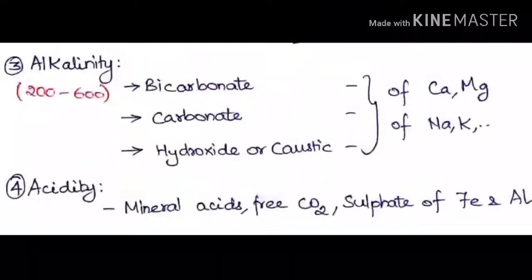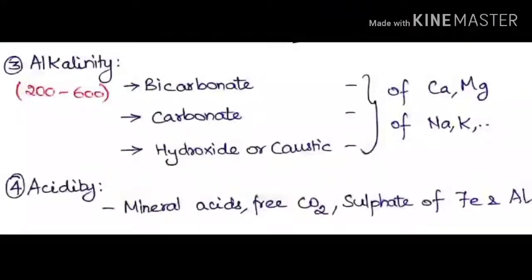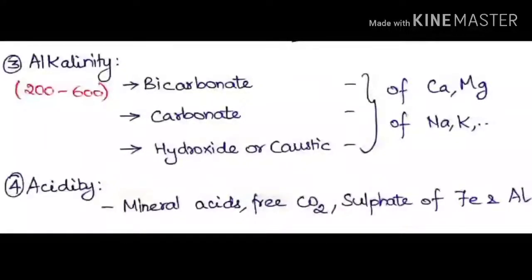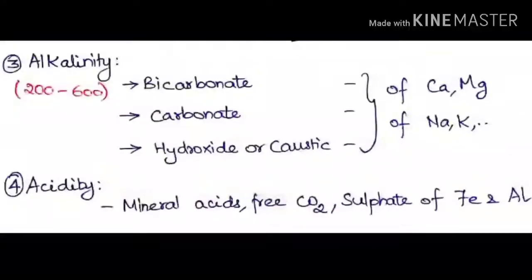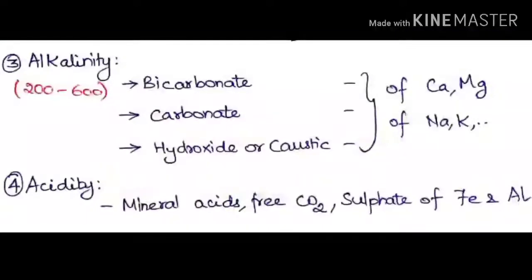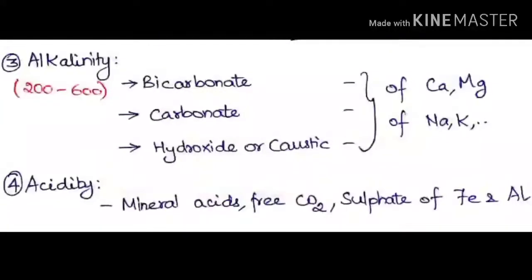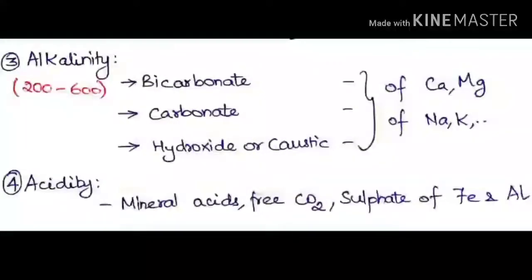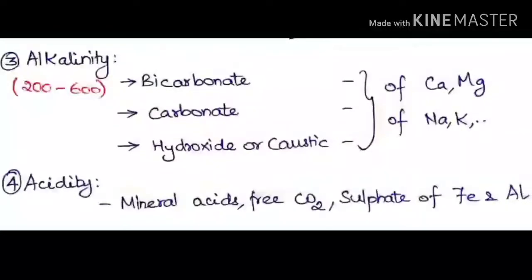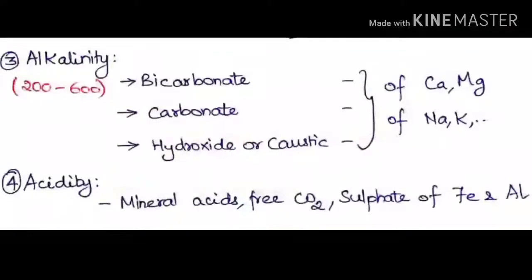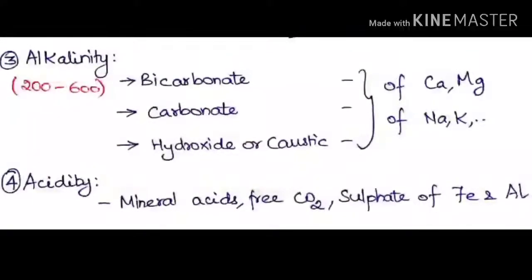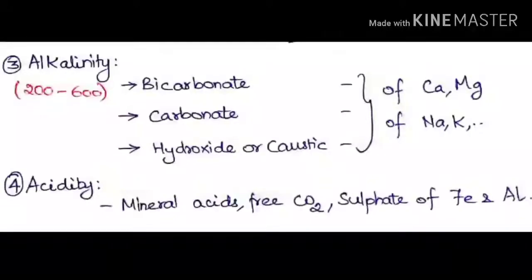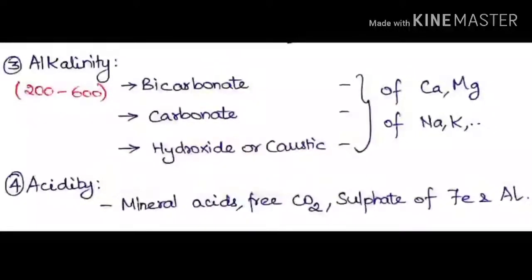The next characteristics are alkalinity and acidity, both related to pH. Alkalinity has a desirable limit of 200 and permissible limit of 600. Alkalinity is of three types: bicarbonate alkalinity (due to bicarbonate ions of calcium and magnesium), carbonate alkalinity (due to carbonates of sodium, potassium, calcium, magnesium), and hydroxide or caustic alkalinity. For acidity, if water contains mineral acids, free carbon dioxide, or sulfates of aluminium or other ions, acidity increases.